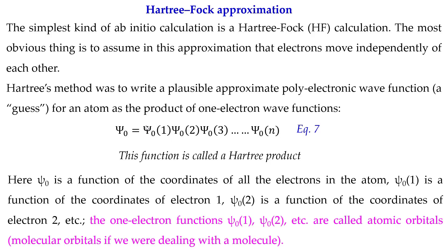Psi_0(2) is the wave function for electron two. These are all one-electron wave functions, whereas psi_0 is the multi-electron wave function. For an N-electron system, the N-electron wave function is expressed as the product of N one-electron wave functions. This function is called a Hartree product.